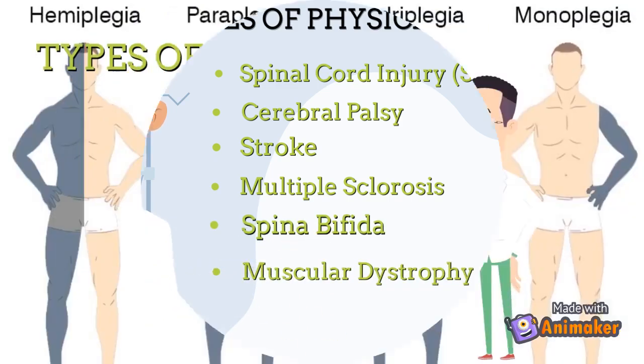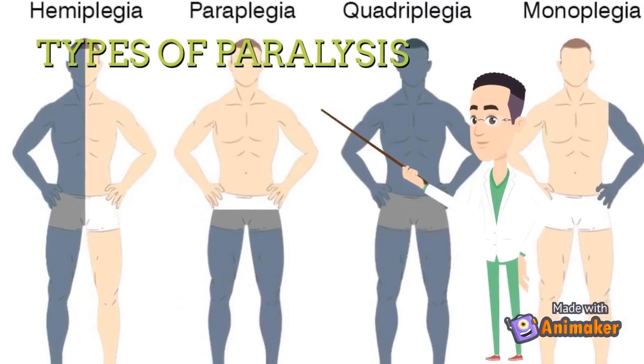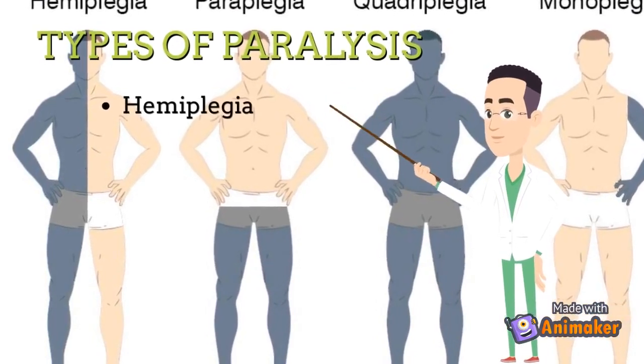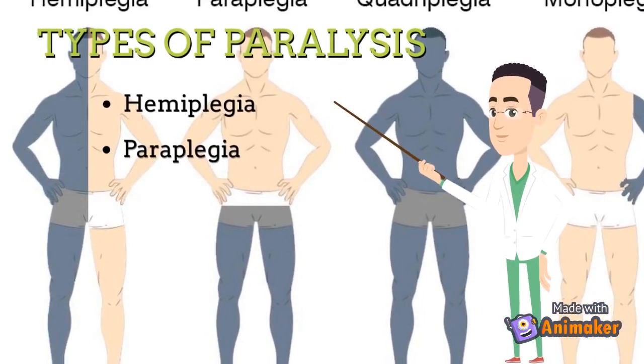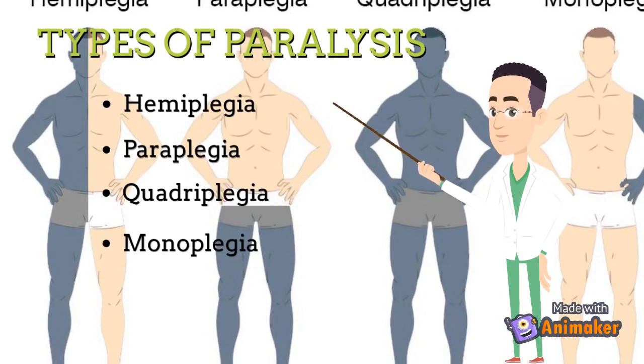Types of paralysis: hemiplegia, paraplegia, quadriplegia, and monoplegia.